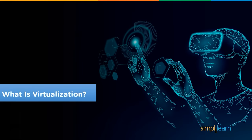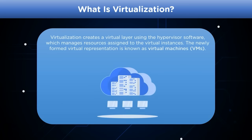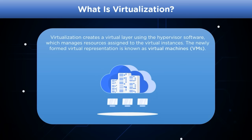Virtualization is nothing but utilizing software to create a virtual layer over the hardware, which allows the system hardware to be used more efficiently and allows appropriate return for hardware cost. The software hypervisor also allows elements of the system — like storage, memory, and processor — to be distributed among multiple separate and secure virtual computers known as virtual machines.